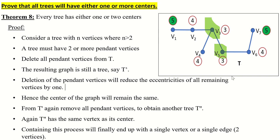Now I have a tree with n vertices, where n is greater than 2. The leaf vertices of the tree are called pendant vertices. This is how we identify the center of a tree.